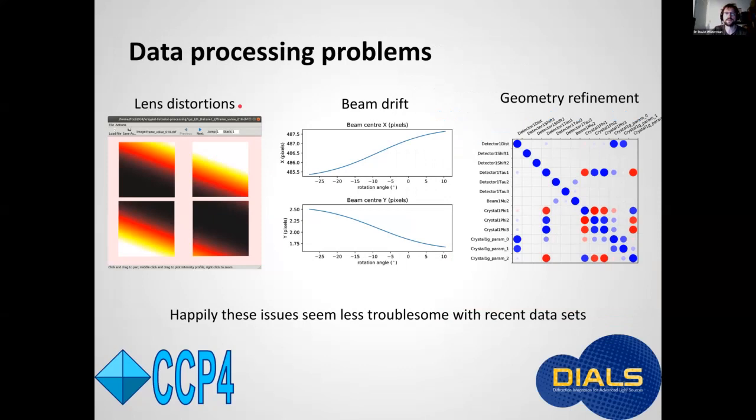Processing that data showed numerous problems that we had to address in order to get dials to work. So first, the lenses in electron microscopes may introduce distortions into the diffraction patterns. And dials is a program that was born in the era of hybrid pixel array detectors and it didn't have the means to correct distortions. So we had to add that first.